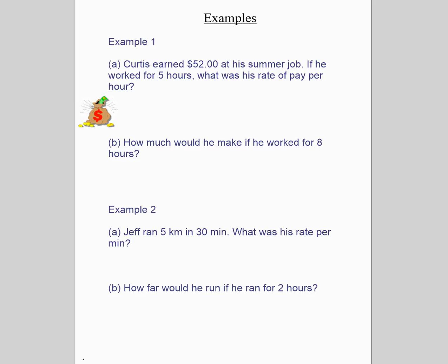So why are unit rates important? They help us solve problems and figure out things. If I know how much I make per hour, I can calculate what my salary might be for a week and so forth. Curtis earns $52 and he works for five hours. What does he make per hour? To do that, you just do 52 divided by five, and you're going to get 10. The calculator will say 10.4. Because it's money, we make that $10.40 per hour.